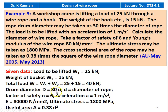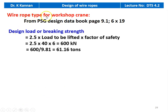Drum diameter is 30 times the diameter of the rope. Factor of safety is given as 6. Acceleration is 1 meter per second squared. Young's modulus is 80,000 newton per millimeter squared. Ultimate stress is 1800 megapascal. Useful area A equal to 0.38 times diameter squared. The wire rope type for the workshop crane from PSG design data book page 9.8 is 6 by 19. The design breaking strength equals 2.5 into load to be lifted into factor of safety: 2.5 into 40 into 6 equal to 600 kilonewton, which is 600 divided by 9.81 equal to 61.16 tons.